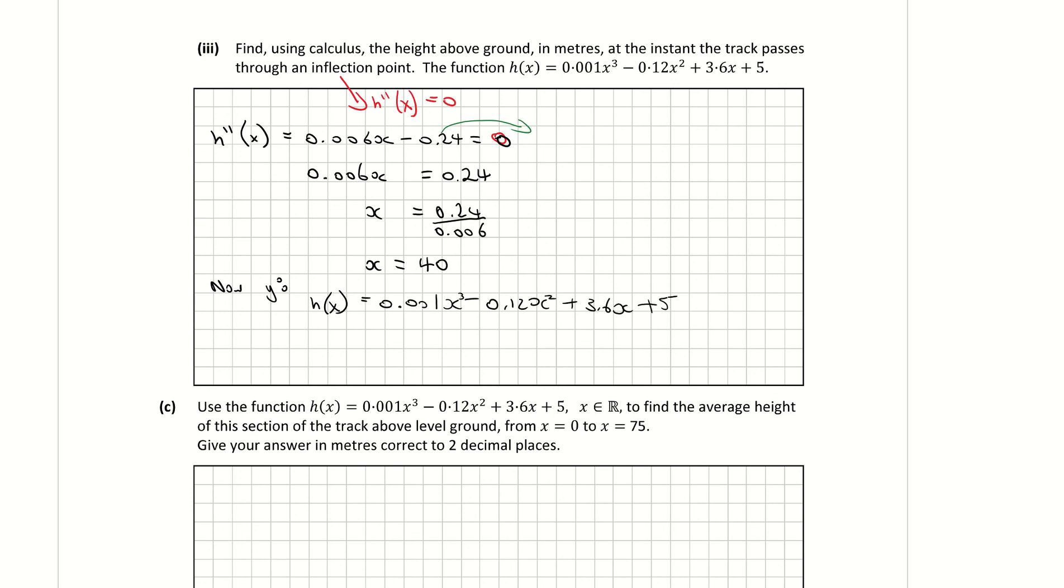And I'm subbing in h of 40. So 0.001 times 40 cubed minus 0.12 times 40 squared plus 3.6 times 40 plus 5. I'm just putting my 40 in a different color there to see that I'm substituting in that value. And when I work that out in my calculator, I'm getting a value of h of 40, which is y in other words, of 21. So therefore, my point of inflection is going to be 40, 21.